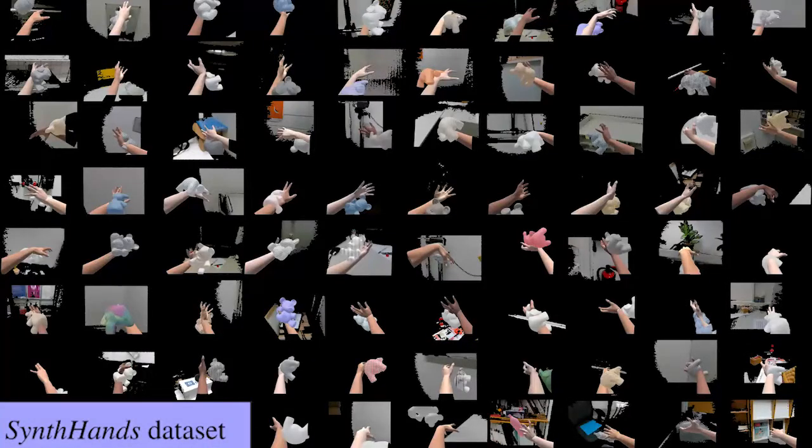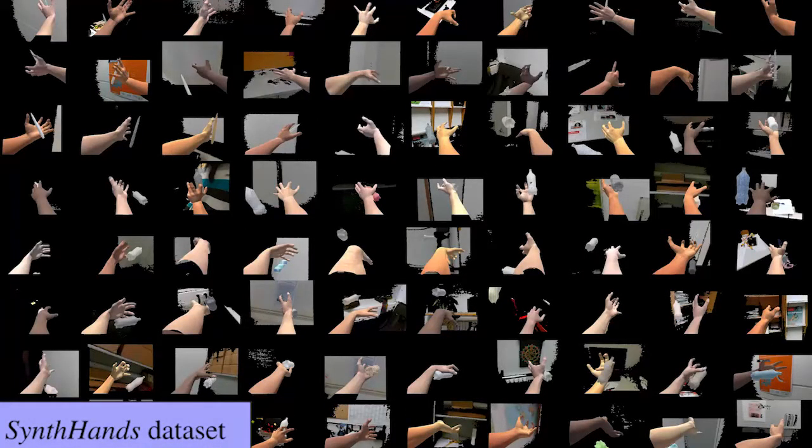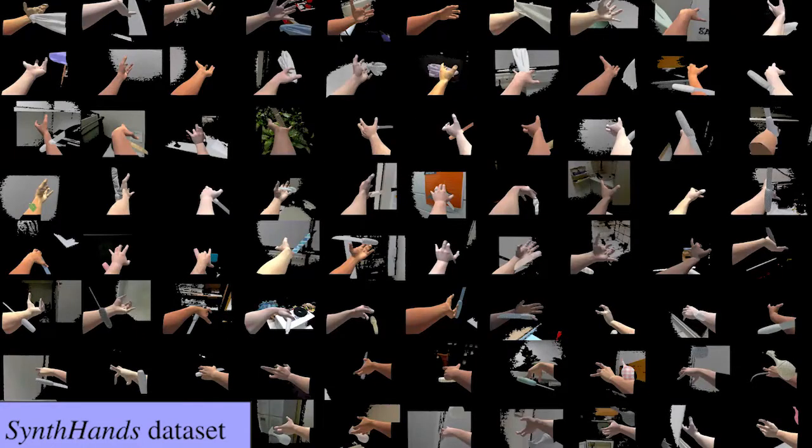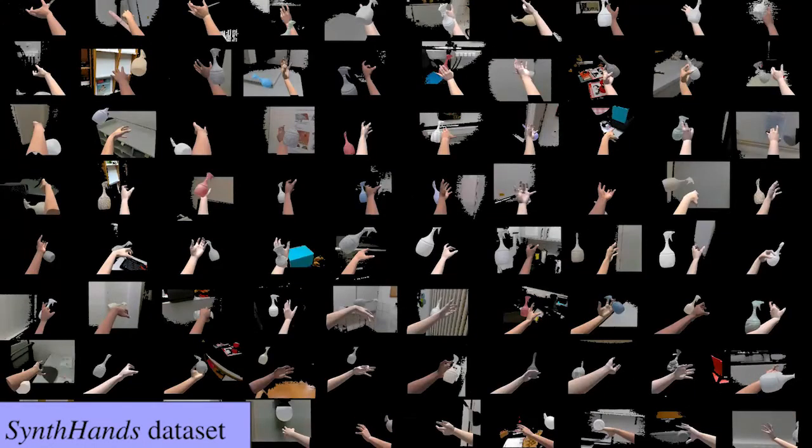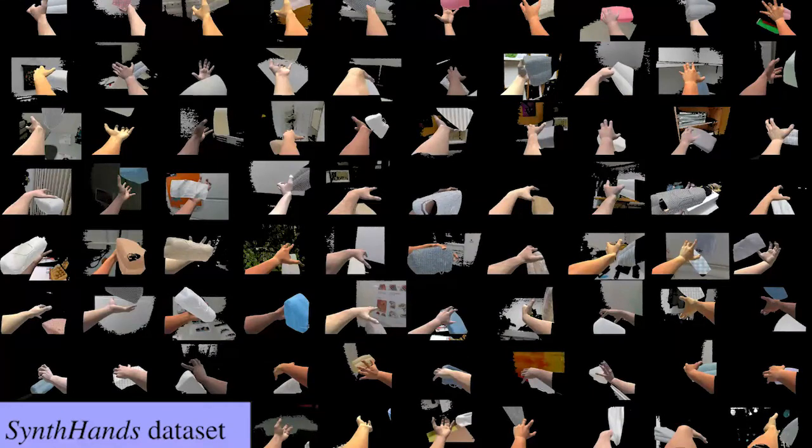We can then animate the hand to sample important dimensions of variability such as pose, skin color, shape, texture, background clutter, camera viewpoint, and hand object interactions.